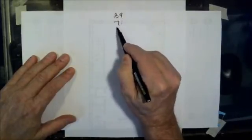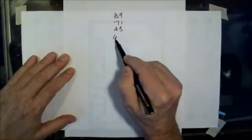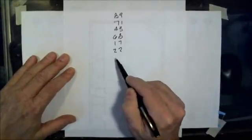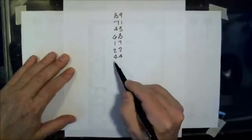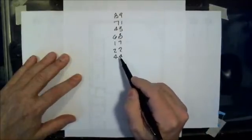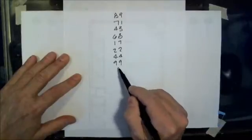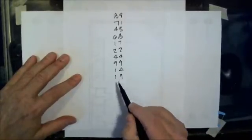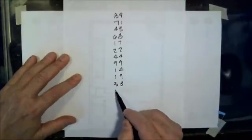89, 71, 43, 68, 17, 22, 44. They're all going to be two digit numbers just to keep it simple right now. 99, 14, 19, 33, 17.